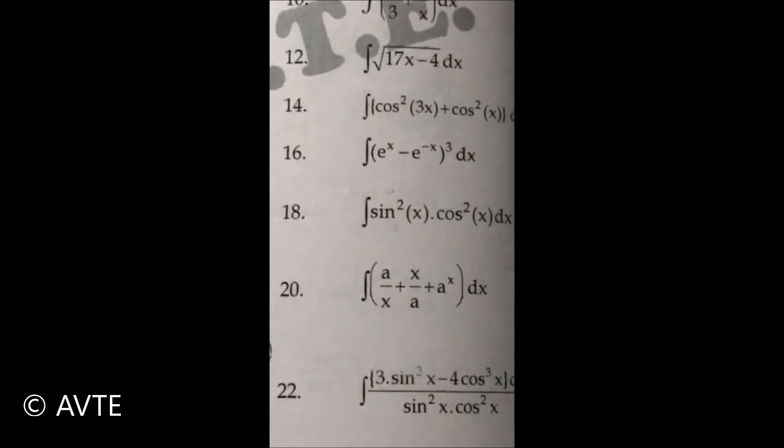You can write that as 1 minus cos 2x upon 2. You already have 1 by 4 outside, so it will be 1 by 8 outside. You can integrate easily.